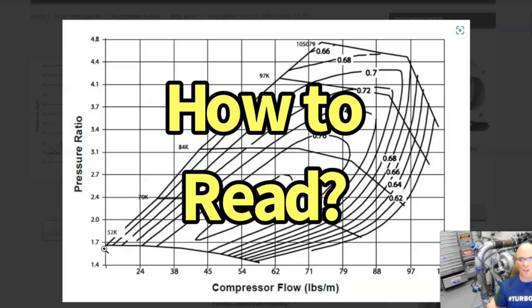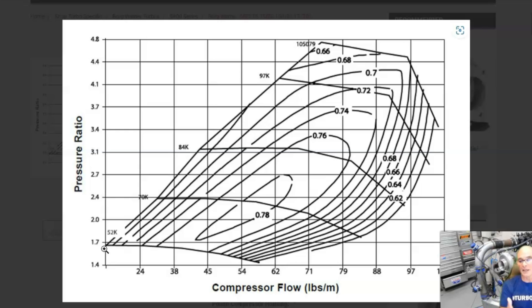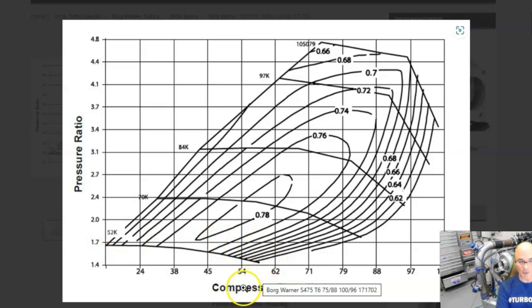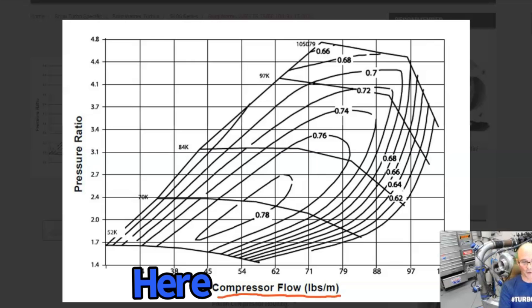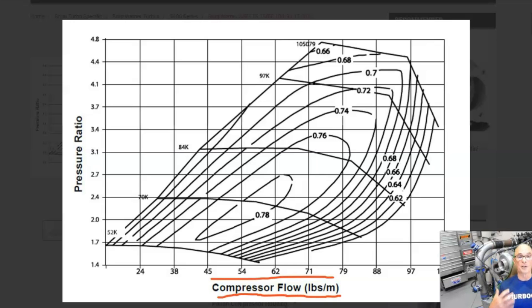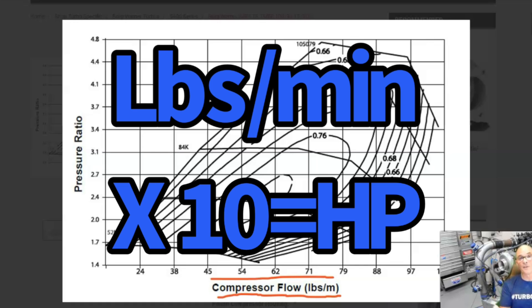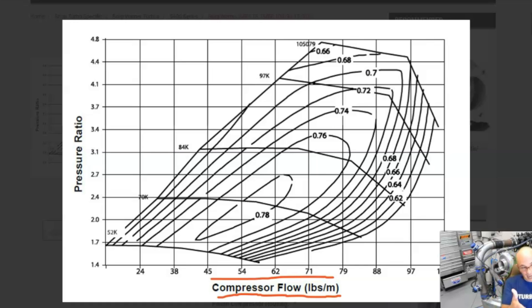So how do I read this compressor map? The first thing you have to do is understand what both sides mean and how I convert them. Down here we see compressor flow in pounds per minute. See all these numbers — 24, 38, 45, 54 — all these numbers over here, that is airflow. The way that I convert that so I understand it better, I convert it directly to power. If we multiply every one of those numbers by 10, we get the amount of power that that airflow will support. So we have 240 horsepower, 380, 450, 540, all the way out to 1050 horsepower. So at the bottom, multiply the number — if it's given in pounds per minute — by 10, and you have the amount of horsepower that that turbo will support.